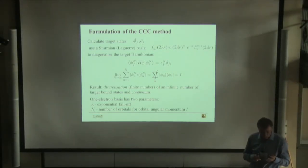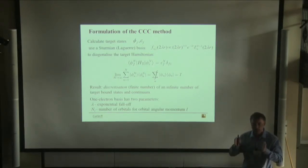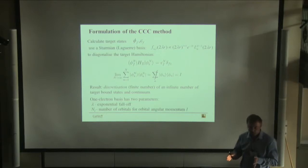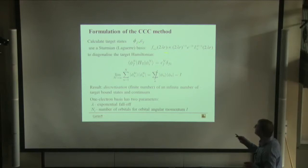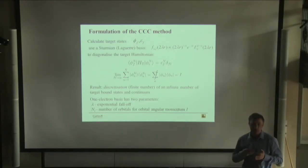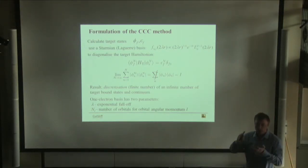We follow a standard procedure. First, we produce a target spectrum, and we do this by diagonalizing the target Hamiltonian in a Sturmian-Laguerre basis. Sturmian bases are very good because they allow us to represent both parts of the target spectrum — the discrete spectrum and the continuum.